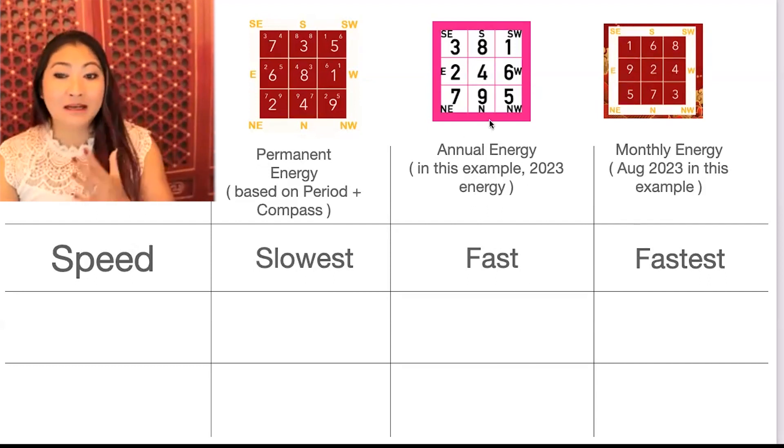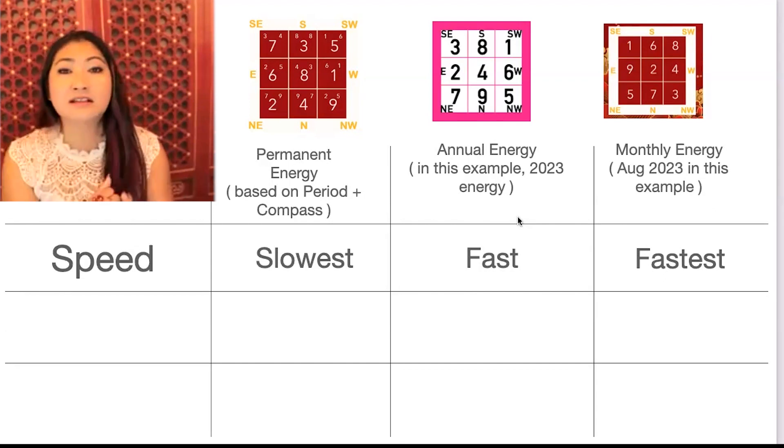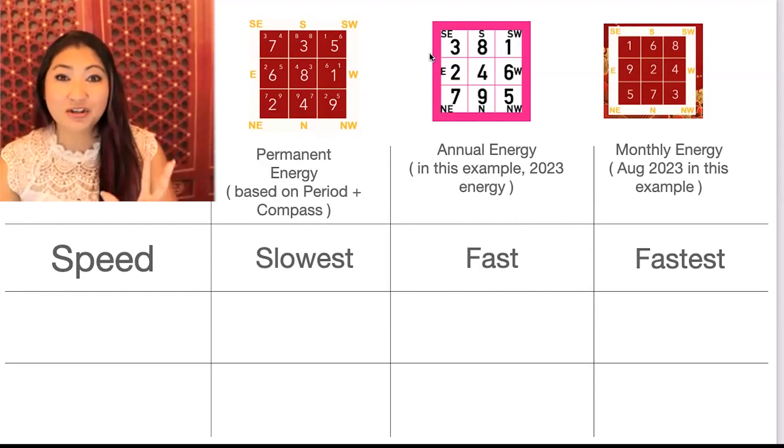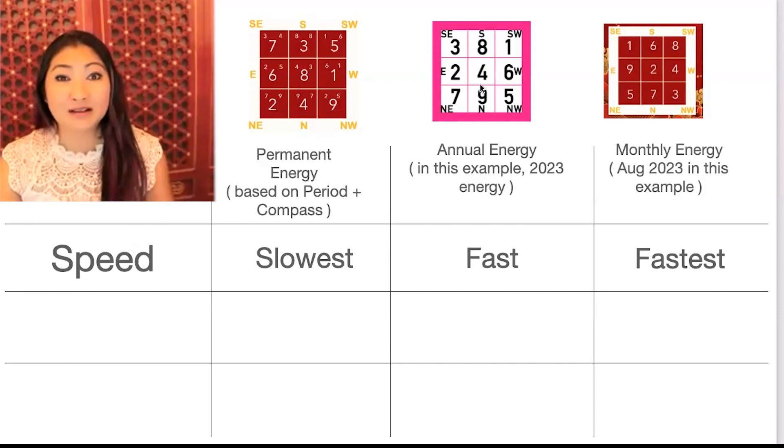The annual energy is medium fast. So let's say you're like, this is the year for me to build my business, this is the year for me to get that promotion. You want to make sure that you align your feng shui placements to the most auspicious annual energy as possible.